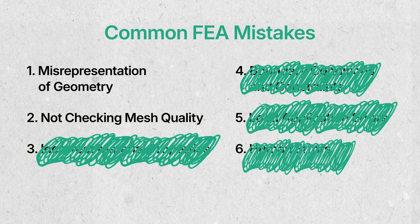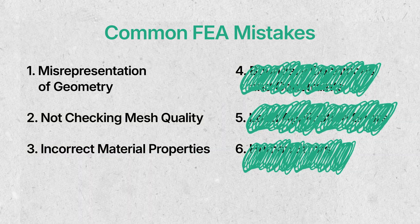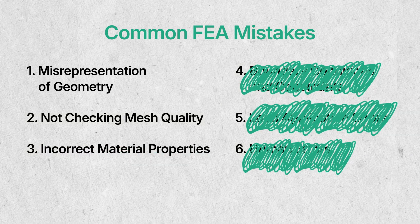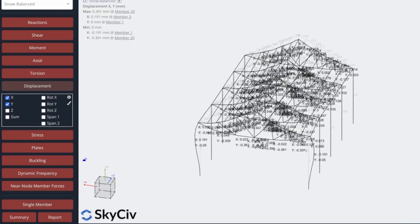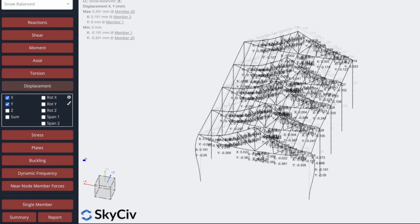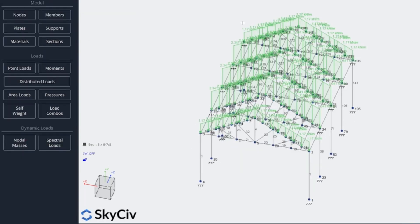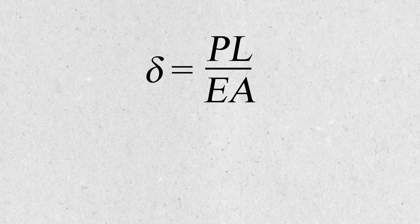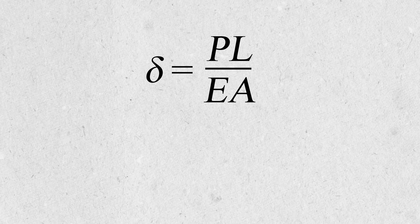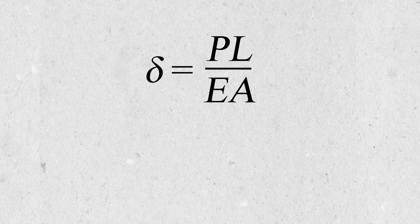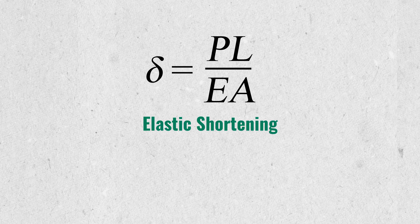Mistake number three is not checking your material properties correctly. I've gone into models and found that the material properties are incorrect, leading to a model that is too stiff or too soft. When you look at the deflected shape, you can see it's deflecting a little bit too much. Going back to the formula for elastic shortening — PL over EA — where P and L haven't changed, the problem is E. The wrong E will lead to greater deflections.